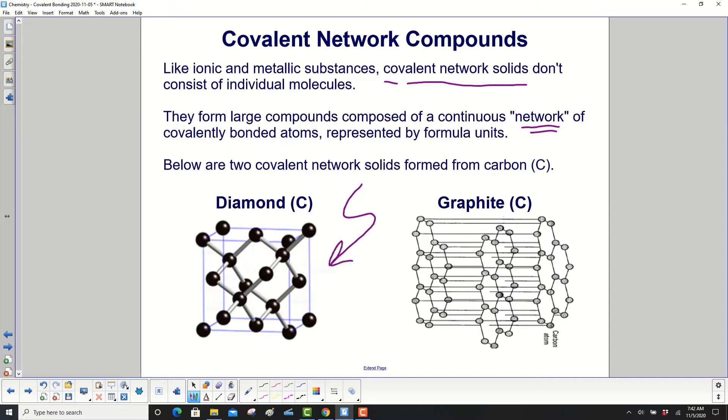Here are two covalent network solids formed from carbon. You have diamond here and graphite here. Both of them only have carbon in them, but the networks look very different, don't they?